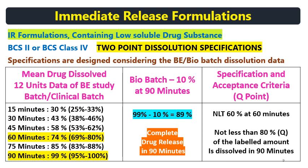That earlier time point will be 60 minutes, so that the specification is biorelevant and discriminatory. At 60 minutes, you can give a specification of not less than 60% dissolved. At 90 minutes, you can give a specification of not less than 80% Q of the labelled amount dissolved in 90 minutes.